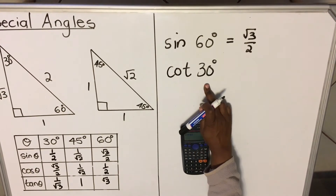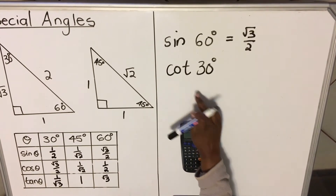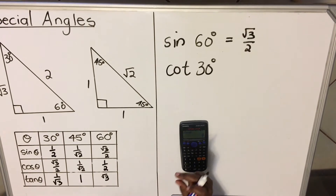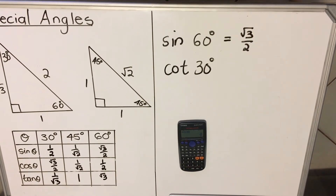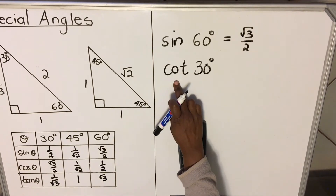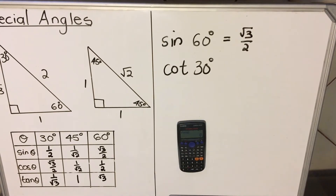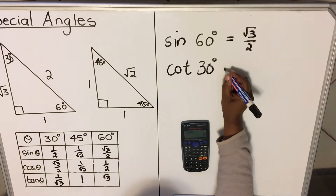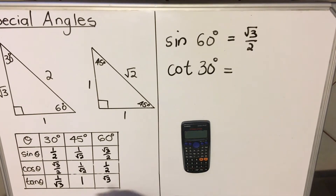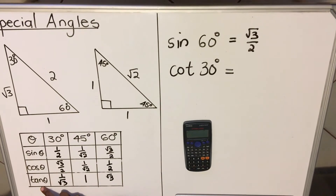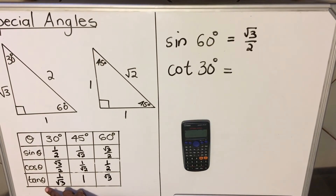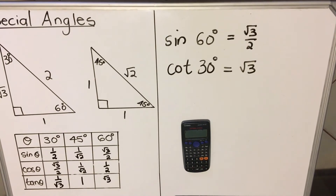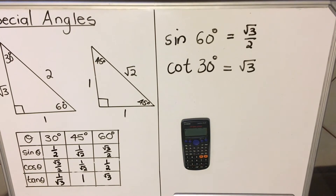Let's look at cot 30. You should remember that cot is the reciprocal of tan. So for cot 30, you find tan 30 and then swap it around, because the reciprocal is the inverse. We find tan 30 — looking at our table, tan 30 is 1 over root 3. But because we were asked for cot, which is the reciprocal of tan, you swap it around, and your answer will be root 3.